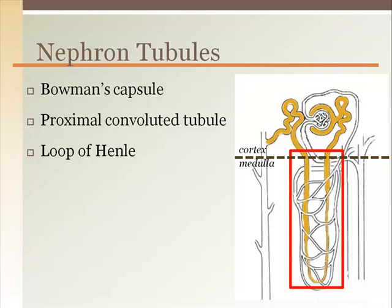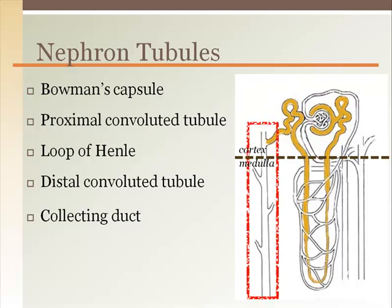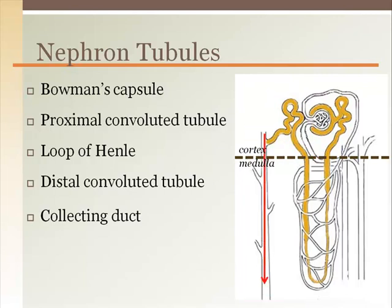The loop of Henle is the portion of the nephron that enters the medullary pyramids. It is shaped like a U with a descending limb and an ascending limb. This shape is important to create a concentration gradient to increase the reabsorption of water. The distal convoluted tubule is the final location for reabsorption and is also where hormones such as aldosterone and antidiuretic hormone target to retain more sodium and water.